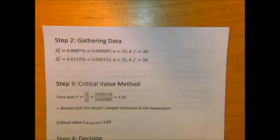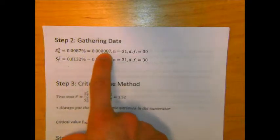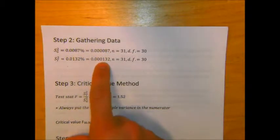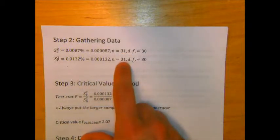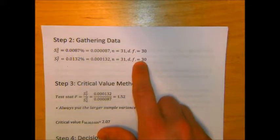In steps two and three, we gather our data and perform the critical value method, where we find the test statistic and critical value. The two sample variances are as reported. We convert those into decimals so we can enter them into our calculator. The sample sizes for both were 31. Thus we have two degrees of freedom for this test, one for the first sample and one for the second sample. Those degrees of freedom are always the sample sizes minus one.